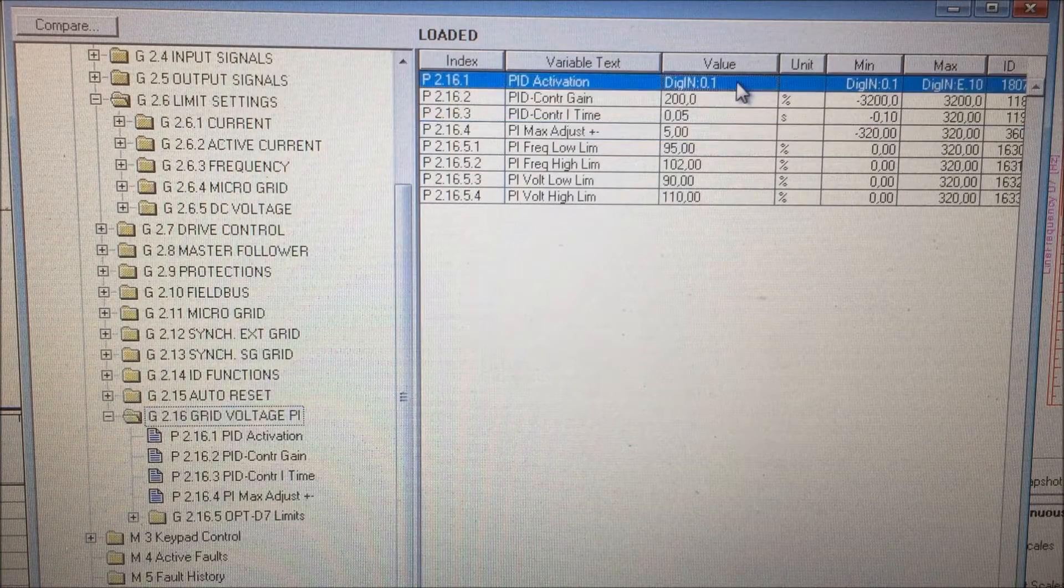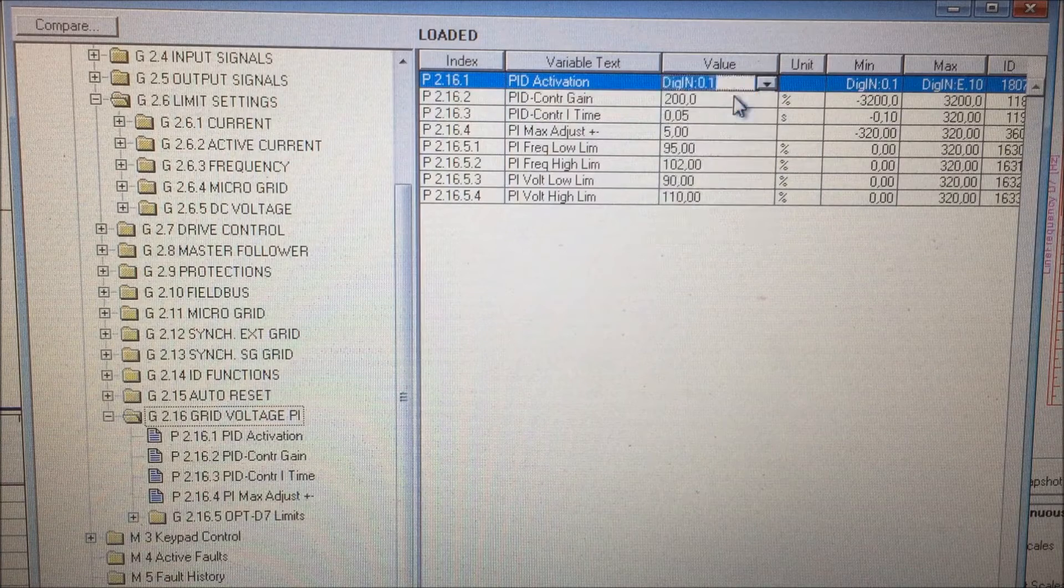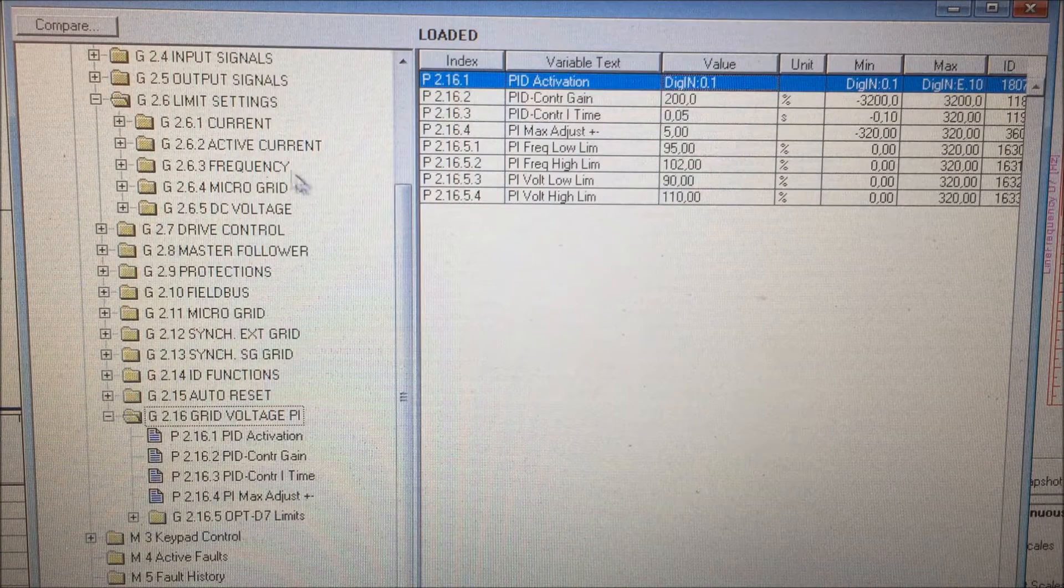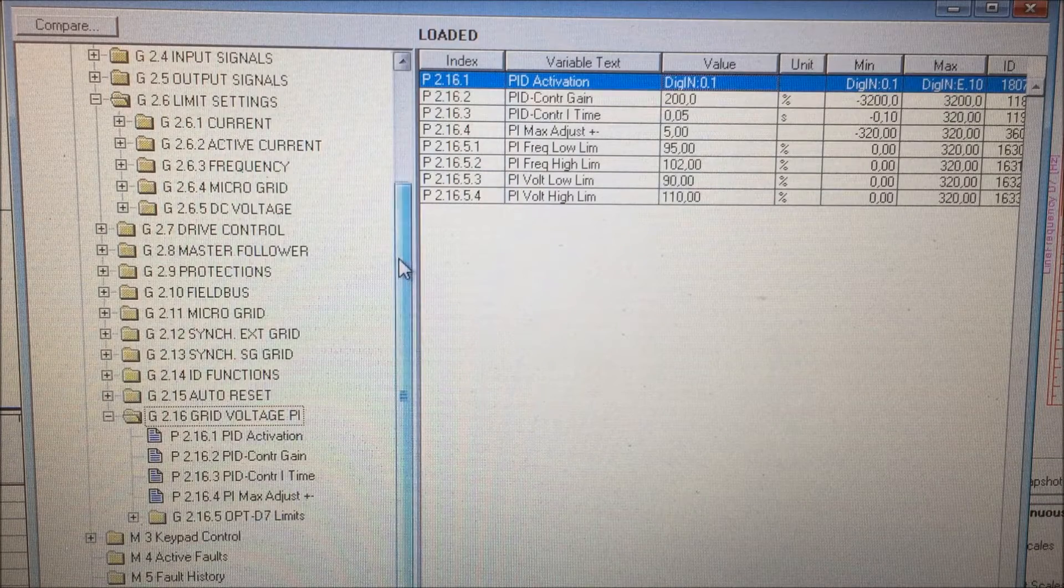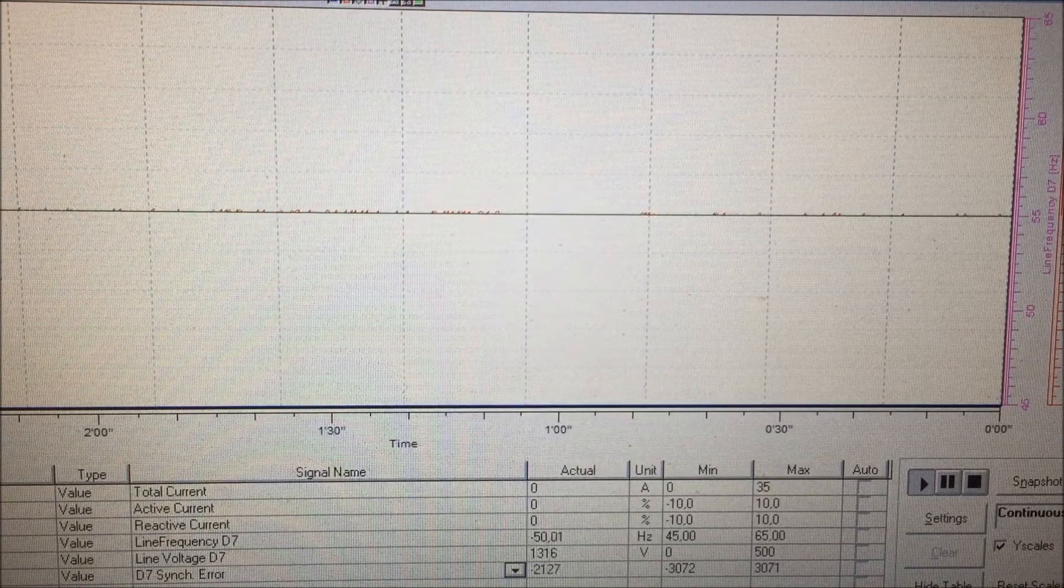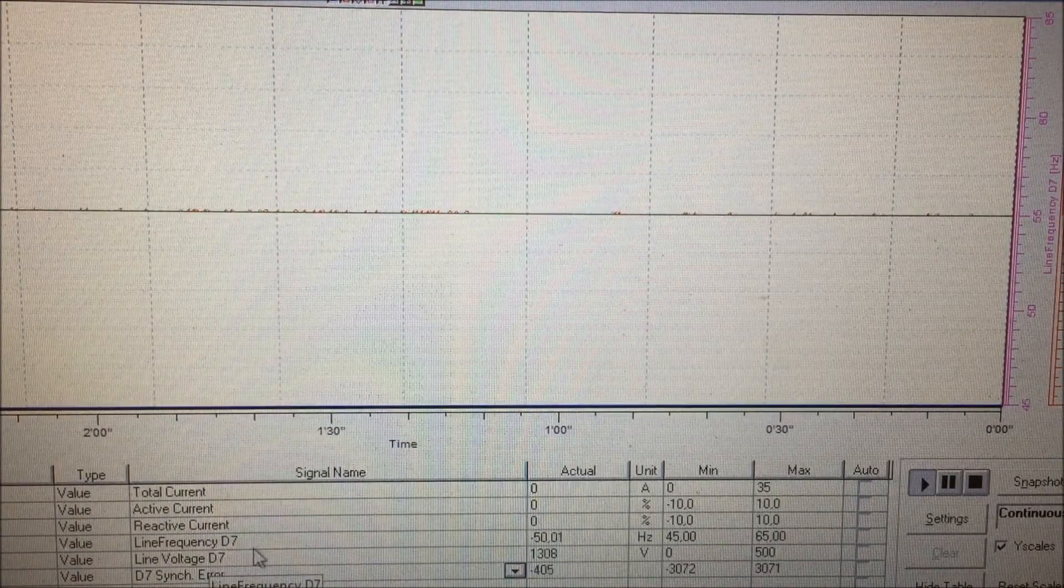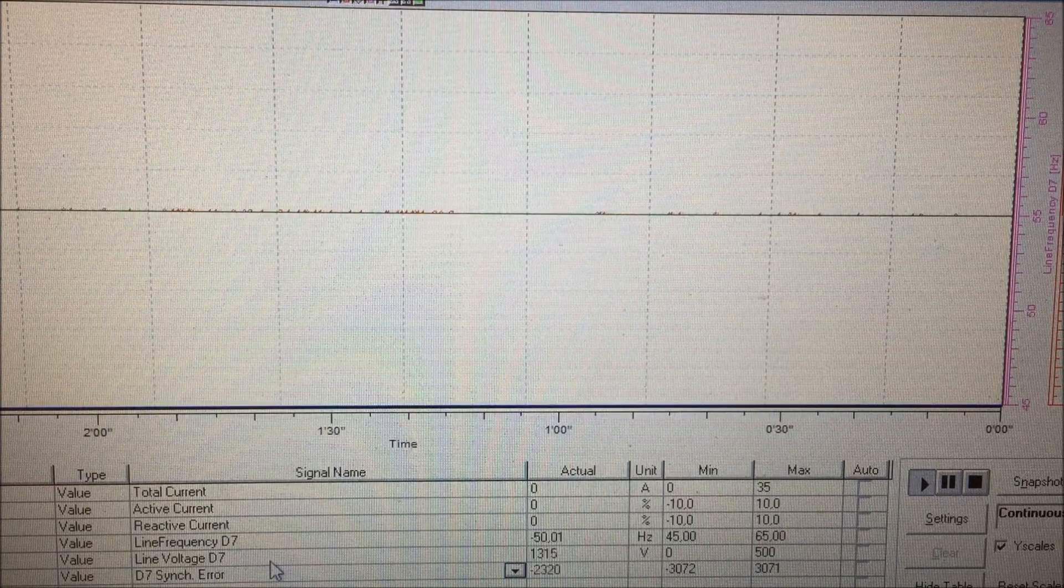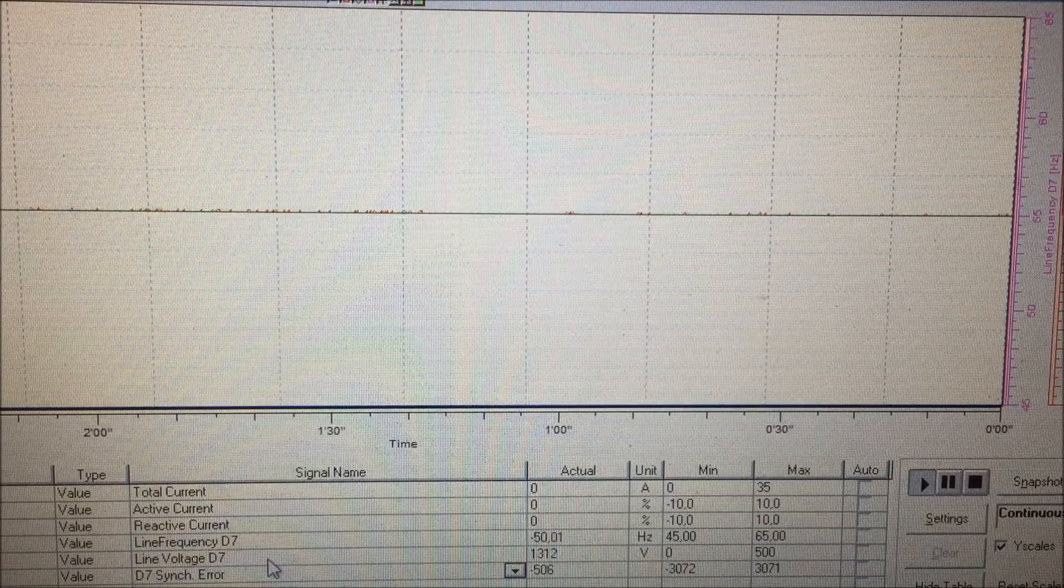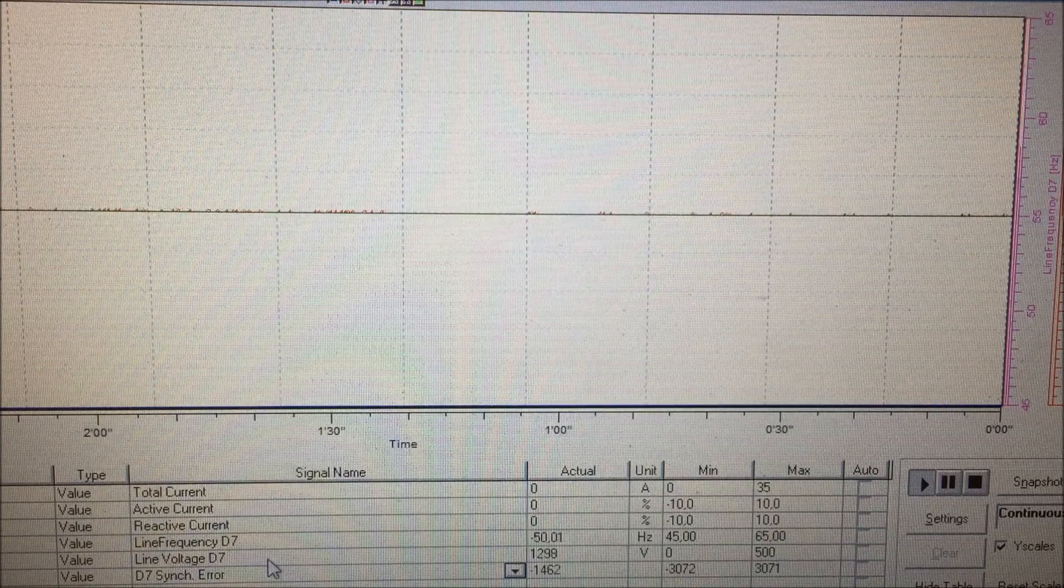Make sure that this is set to 01 and not to 02 like this. Where we can monitor what's going on is here. You should look at the current, active current, reactive current, and the line frequency line voltage because that is what we measure with the d7 small transformer on the grid.